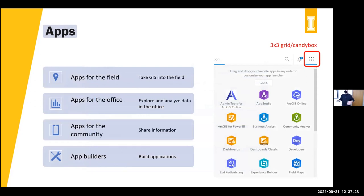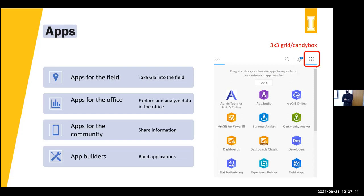When we sign in to ArcGIS Online through a web browser, there's a small 3x3 grid in the upper corner — some people refer to it as a little candy box — which gives you a dropdown of a lot of these applications that we'll talk about today. This list is longer than what I show on the slide, but it will give you direct links to these apps.